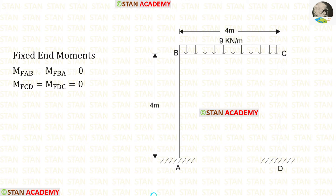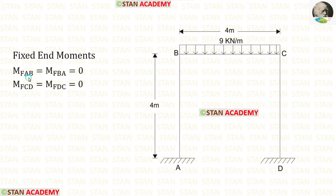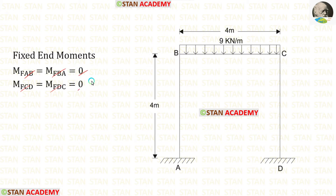Now let us find the fixed end moments. In the columns AB and CD, there are no loads. So the fixed end moments M of AB, M of BA, M of CD, and M of DC are zero.